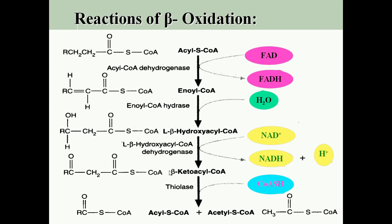In beta-ketoacyl-CoA there is a thiolytic cleavage between the methylene group and the ketonic group — after two carbons — catalyzed by thiolase enzyme, with incorporation of coenzyme A and release of a two-carbon compound in the form of acetyl-CoA. We have left a 14-carbon fatty acyl-CoA. This sequence of reactions — first oxidation, then hydration, then second oxidation, then thiolytic cleavage — is repeated again and again until after six cycles, yielding a total of eight acetyl-CoA after complete expenditure of one molecule of palmitic acid.